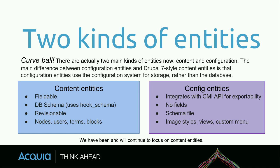Quick disclaimer — there are actually two types of entities. There are content entities, which is what most of us traditionally think about — nodes, users, terms, blocks. And then there are config entities, which are what we use for CMI, so we can export our configuration into code and it doesn't always live in the database. We're really just talking primarily about content entities today. Config entities is kind of another thing — there are some similarities, some differences. So when you're talking to people about entities and they say 'entity,' you can say, 'Oh, are you talking about content entities or config entities?' Because you know those are two different things.